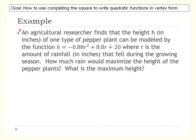Now we have a word problem where we use completing the square to write in vertex form. Research on pepper plant height is modeled by h equals negative 0.88r squared plus 8.8r plus 20, where r is the amount of rainfall and h is the height. The question asks: how much rain maximizes height, and what is that maximum height? Since this is a downward-opening parabola, the maximum is at the vertex. We'll use completing the square to find it.